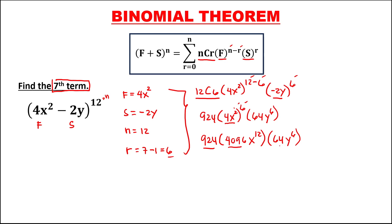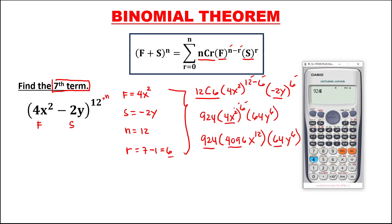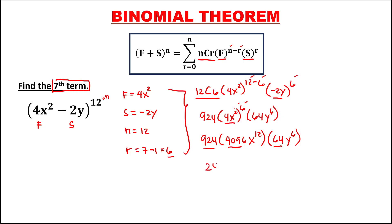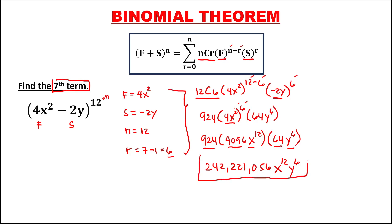Then multiplying the three numbers — 924 times 4096 times 64 — equals 242,221,056. Then bring down the variables x to the power 12 and y to the power 6. So this is the 7th term from the expansion of this binomial.